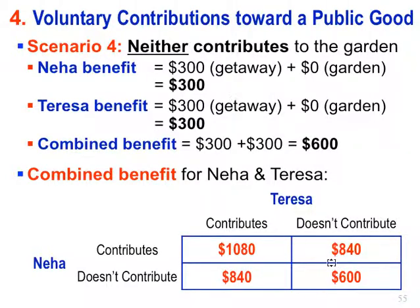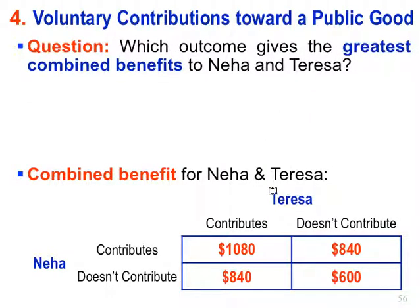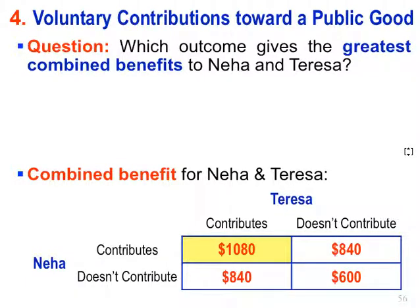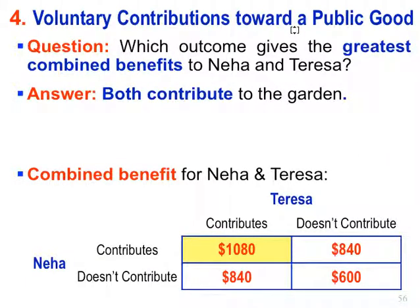That was the first part of the question — they gave you two of the boxes and asked you to fill out the other two for combined benefit. Then you were asked: which outcome gives the greatest combined benefits to Neha and Teresa? We look at the matrix and the greatest combined benefit is $1,080 — that's where both contribute. So the answer is the outcome that gives the greatest combined benefit is the one in which both Neha and Teresa contribute to the garden.